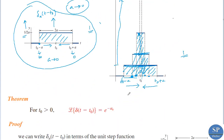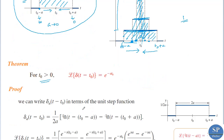Now we have a theorem: the Laplace transform of the Dirac delta function for t₀ > 0 is L{δ(t − t₀)} = e^(−st₀). To find this, we first write the unit impulse function in terms of unit step functions, apply the Laplace transform, and then take the limit as a tends to 0.